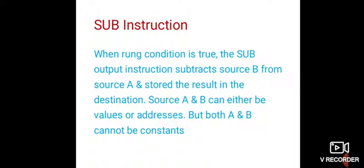Coming to the subtraction instruction: it is used to subtract two values and store the result in the destination when the rung condition becomes true. The SUB output instruction subtracts source B from source A, and the result is stored in the destination mentioned in the program. Both source A and source B can be values or addresses; however, both source A and source B cannot be constants — that is the restriction while subtracting.